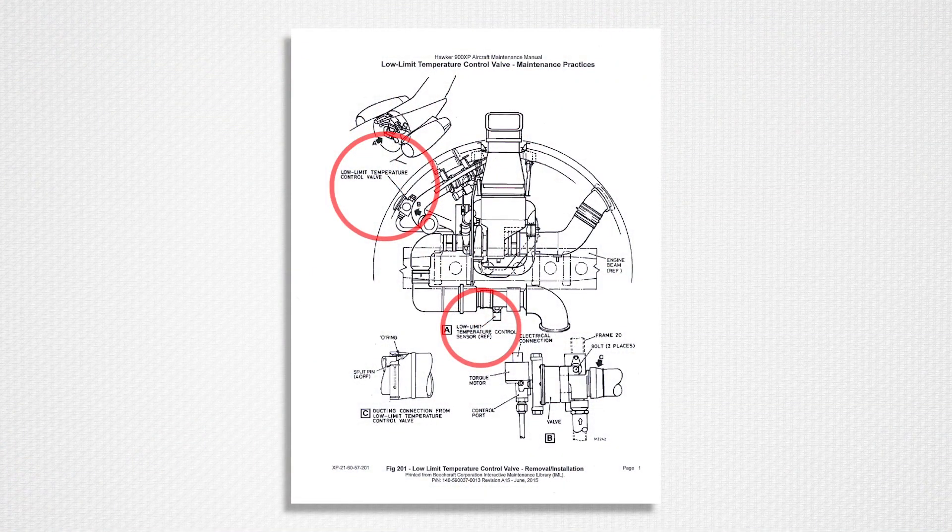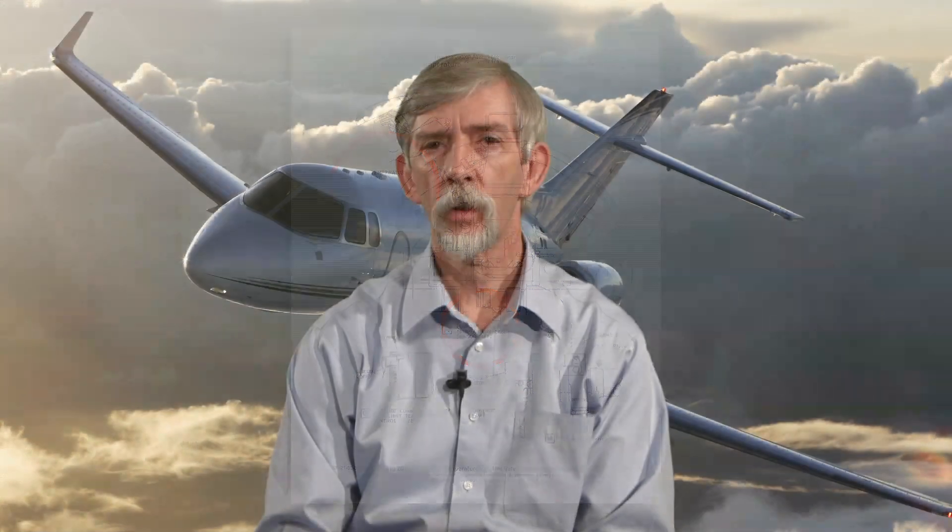The low limit system operates independently — it is not part of the auto control circuit. The low limit sensor signals the low limit control valve to open at approximately 5 degrees Celsius duct temp, to avoid freezing in the water separator. If the low limit valve is either stuck open or being signaled open when duct temperature is not at the low limit, the resulting duct temperature minimum would typically be 20 to 25 degrees Celsius.